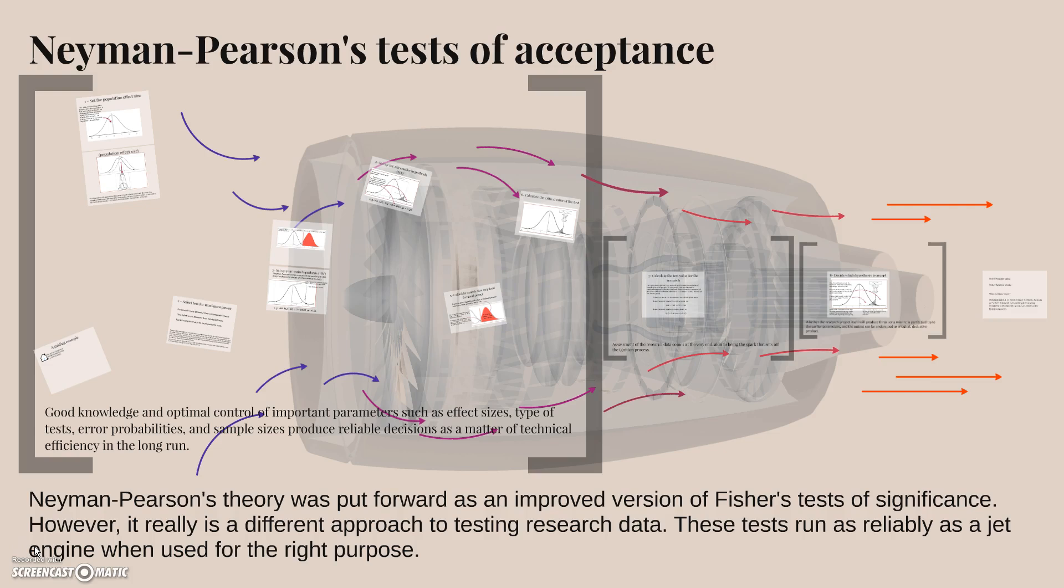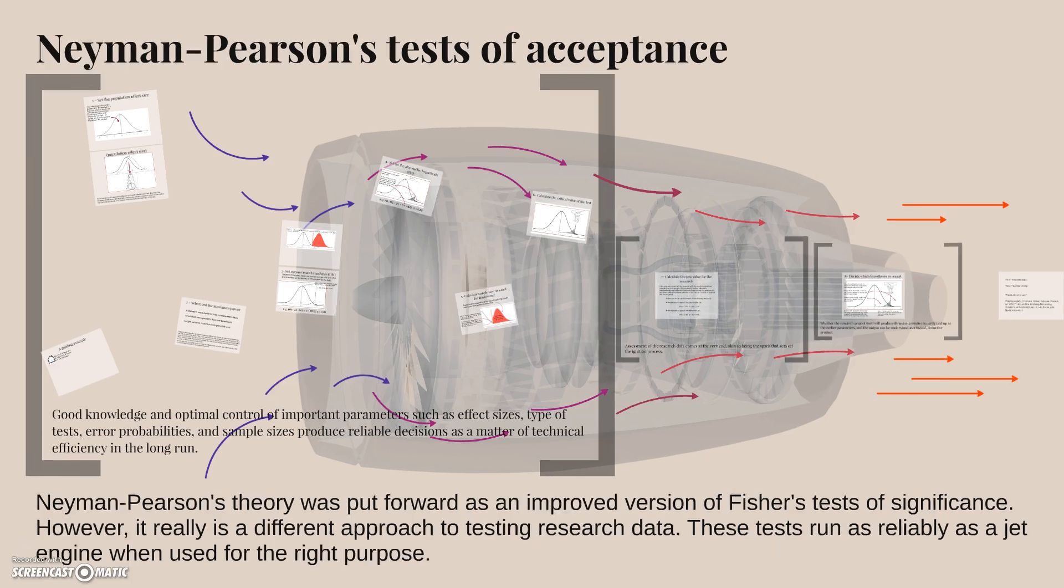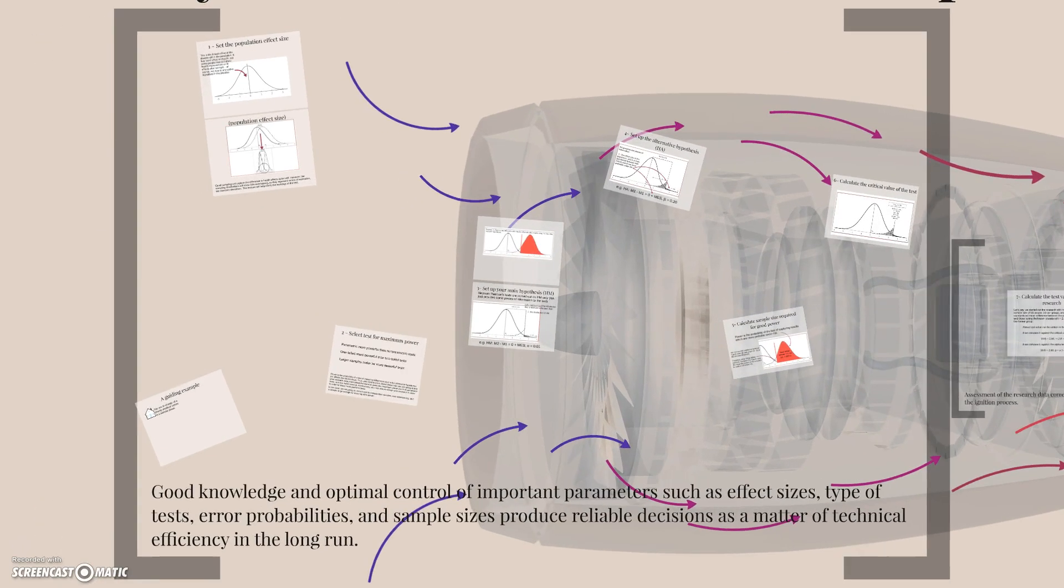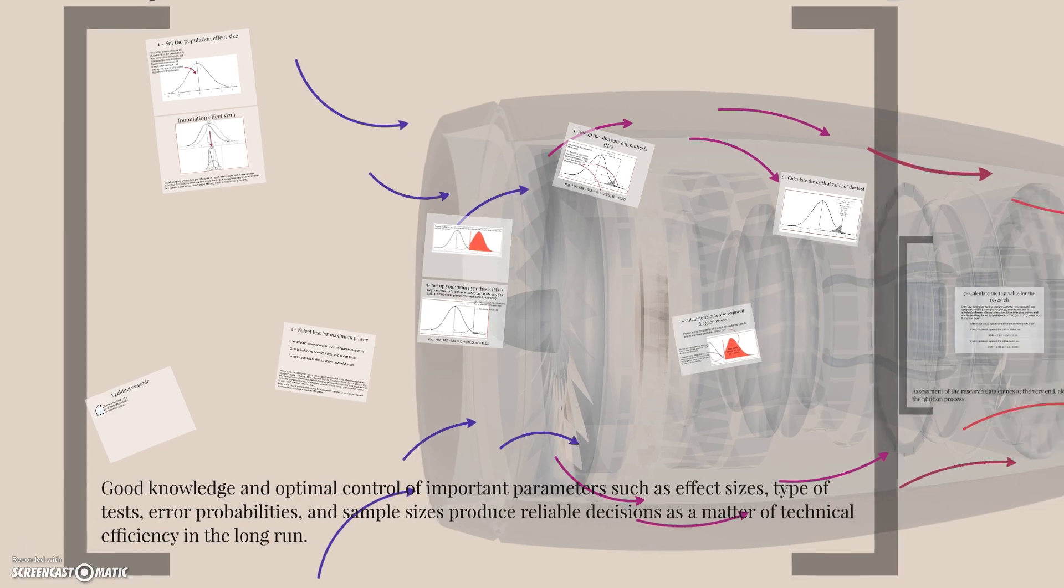However, it really is a different approach to testing research data. These tests run as reliably as a jet engine when used for the right purpose. For example, good knowledge and optimal control of important parameters such as effect sizes, type of tests, error probabilities, and sample sizes produce reliable decisions as a matter of technical efficiency in the long run.